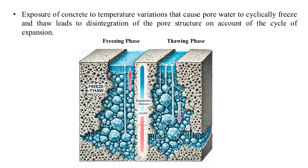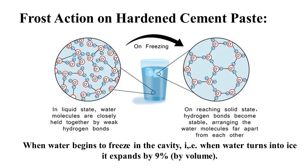If this occurs cyclically — the water freezes, then the temperature in the atmosphere rises, it thaws, then freezes again — this is cyclic freeze and thawing. If that happens repeatedly over a period of time, the pore structure actually disintegrates, and this disintegration of the pore structure is what freeze and thawing causes.